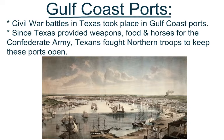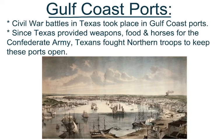A major part for Texas in the war was the Gulf Coast ports. Civil War battles in Texas took place in Gulf Coast ports. Since Texas provided weapons, food, and horses for the Confederate Army, Texans fought northern troops to keep these ports open. These ports were a huge part of the Confederacy — the North would fight the Southerners for control of these ports to cut off the supplies that the Confederate Army needed to fight.